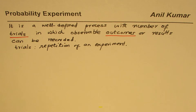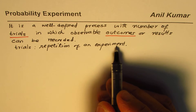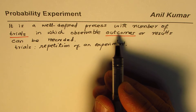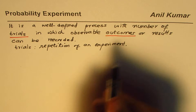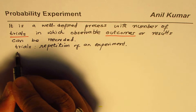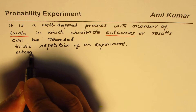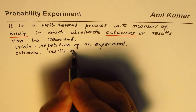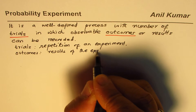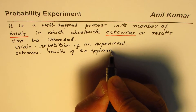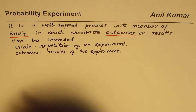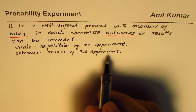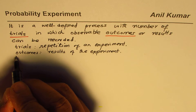The second term we see is 'observable outcomes.' The idea of having an experiment is to record something — what do we get out of the experiment? These are the outcomes, which are the results of the experiment. So outcomes are actually the results of the experiment. An experiment can have many results, and if we group all the results we call this the sample space.